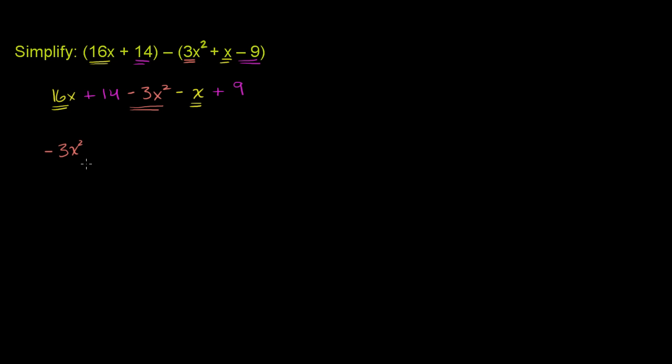And then finally you have your constant terms, 14 and then plus 9. So 14 plus 9 is 23, plus 23. And we are all done. We've simplified the polynomial.